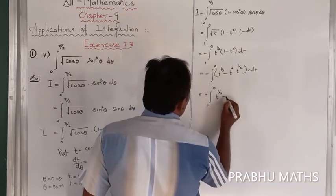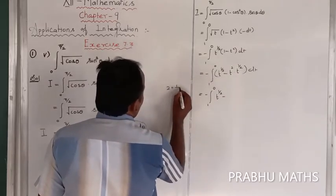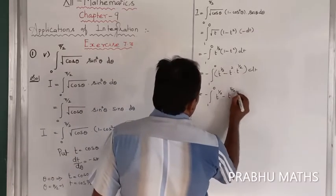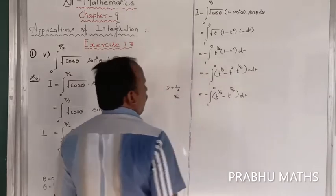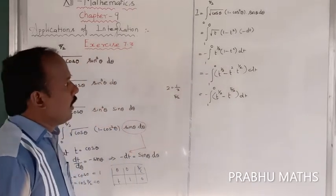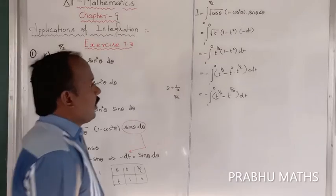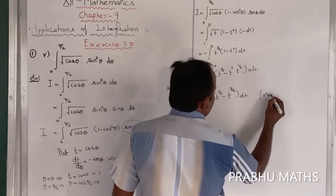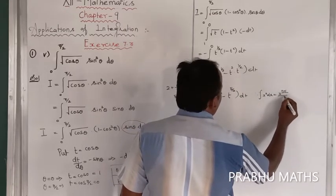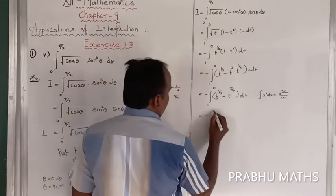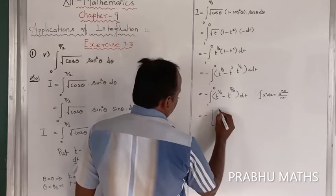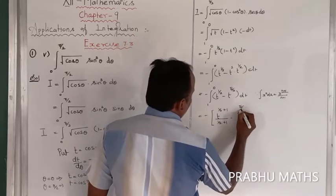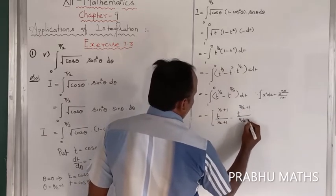The exponent 2 + 1/2 = 5/2, confirming the term t^(5/2). Now applying the power rule — the formula ∫xⁿ dx = x^(n+1)/(n+1) — we integrate each term. This gives minus half times [t^(3/2)/(3/2) - t^(7/2)/(7/2)], evaluated from 1 to 0.